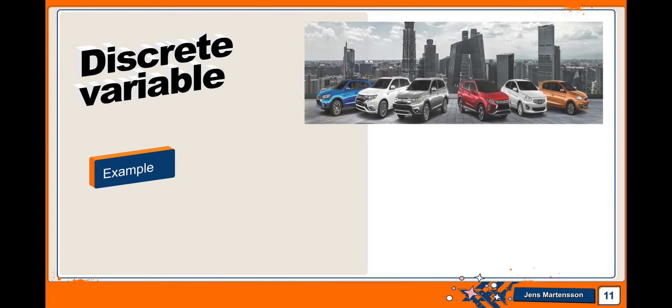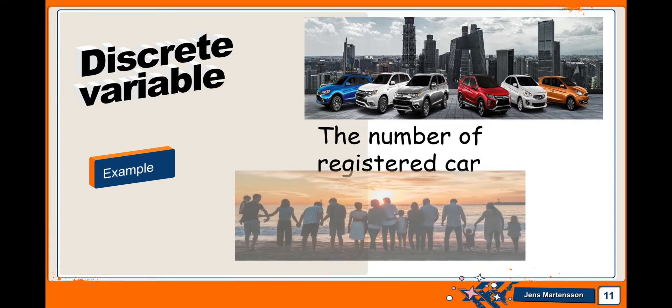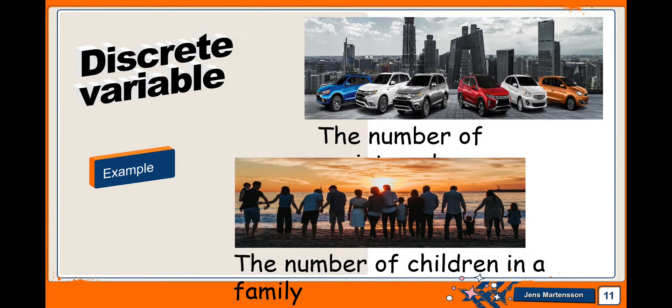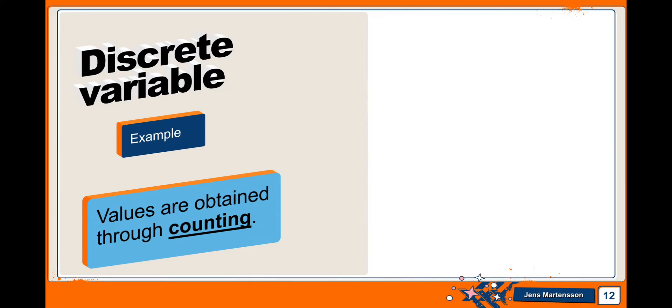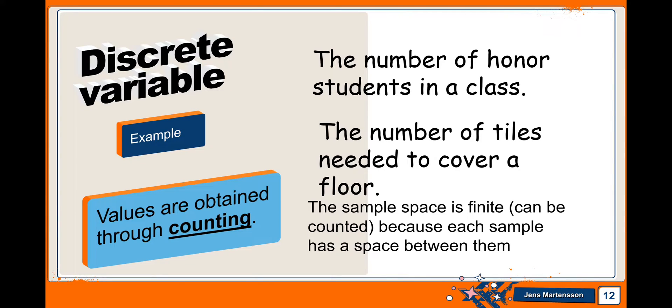Example of discrete variable is the number of registered cars, the number of children in a family. Example of discrete variable are values obtained through counting, as the number of honor students in a class, the number of tiles needed to cover a floor. The sample space is finite, can be counted, because each sample has space between them.